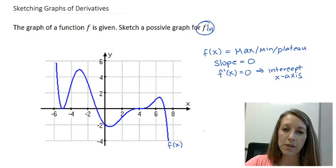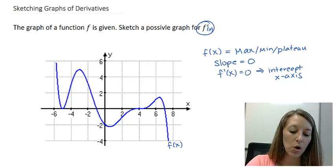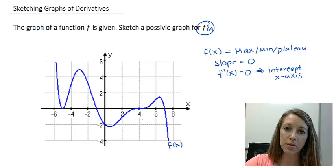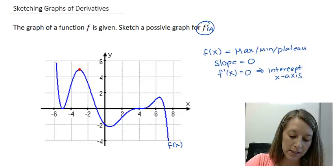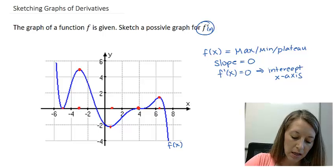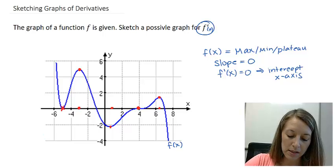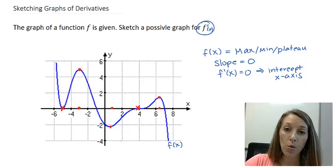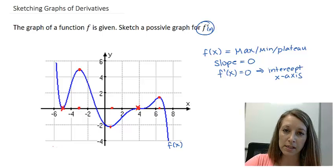Any time I can pick out maxima, minima, or plateaus on my original function, that's going to be an x-intercept on my derivative. Here I see a maximum — that's an x-intercept. Here I see a minimum — there's an x-intercept. Here I see a plateau — that's an x-intercept. Here's a maximum, so that's an x-intercept. And here is a minimum — also an x-intercept. So even at some places where my original function was at an x-intercept, my derivative will also be an x-intercept there because it is a max, min, or plateau at that point.